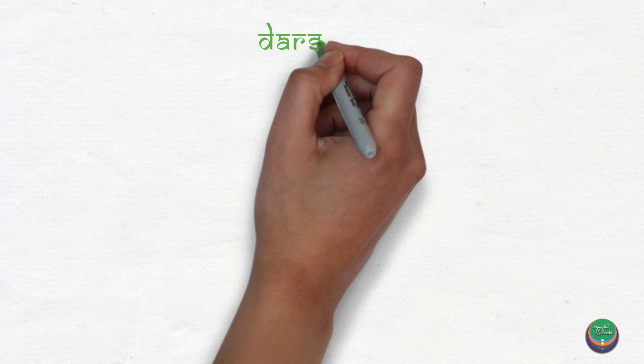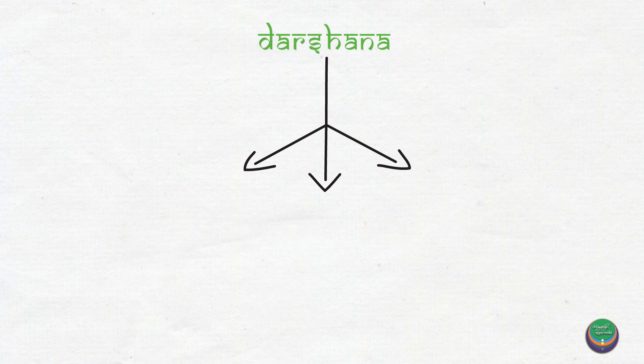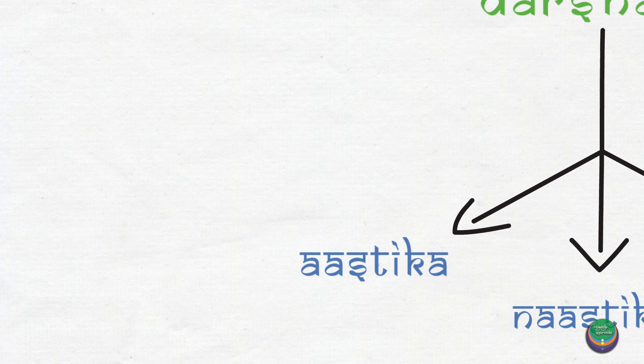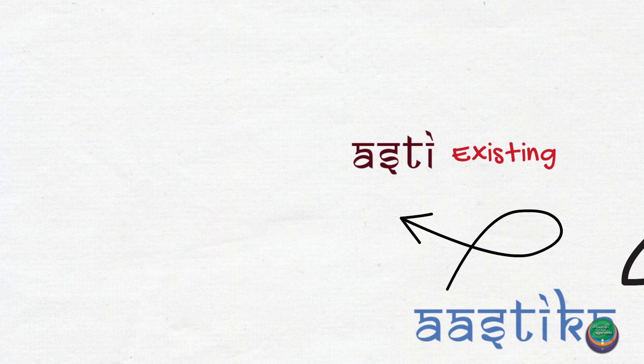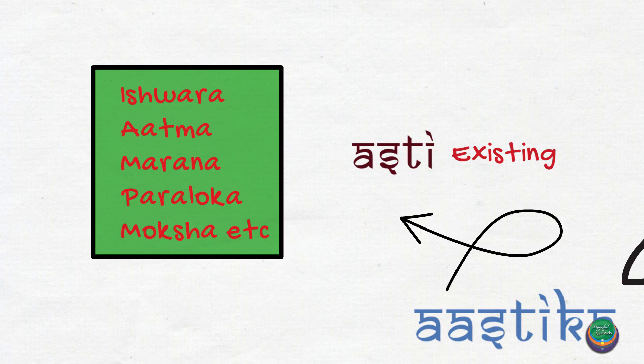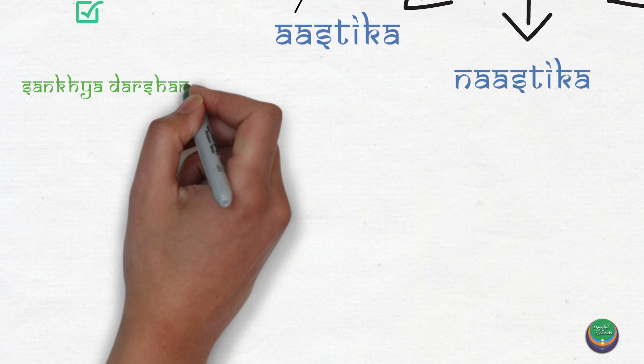Now we will look into the classification of these darshanas. Darshanas are characterized as asthika, nasthika, and asthika-nasthika. The word asthika is derived from asti, which means existing. Hence all the asthika darshanas accept the existence of Ishwara, Atma, Marana, Paraloka, and Moksha. They are the Ashad darshanas.